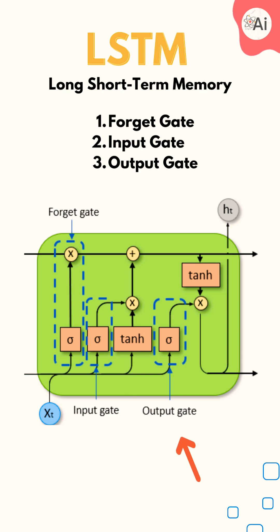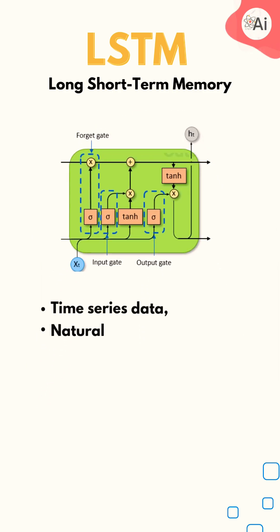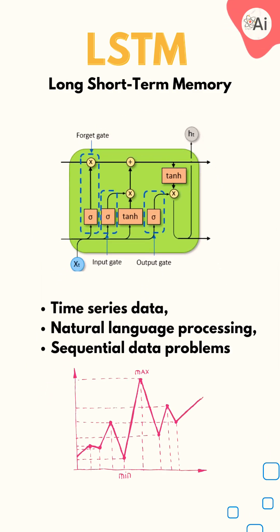And the output gate decides what the next hidden state should be based on the updated cell state. Working together, these gates enable LSTMs to remember and forget information over long sequences, making them particularly effective for tasks involving time series.